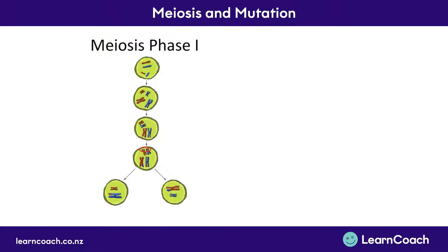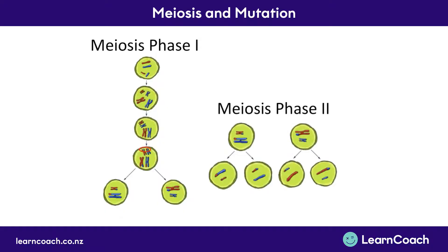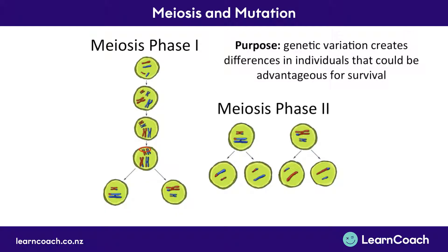Welcome to the first video on genetic variation and change. This one is on meiosis and mutation. Hopefully you'll remember something about meiosis from the level 1 videos, but today we're going to look at those changes and how that affects variation. The purpose of genetic variation — you need to know this — is it creates differences in individuals that could be advantageous for the population's survival.